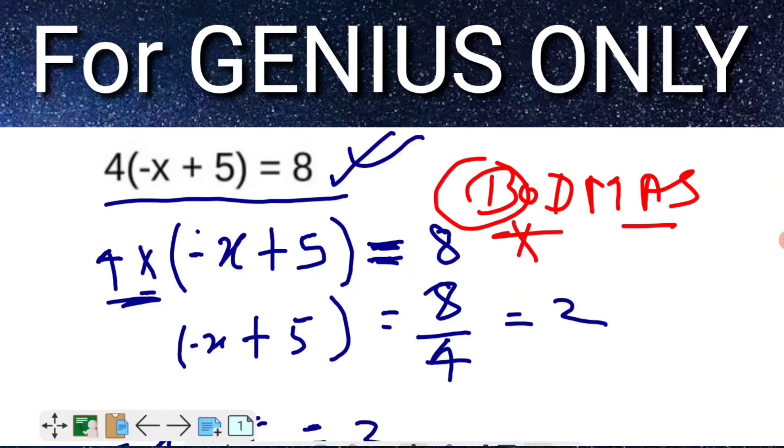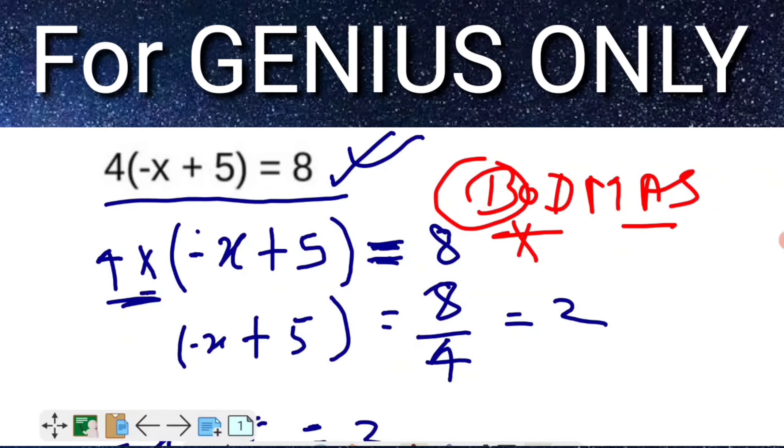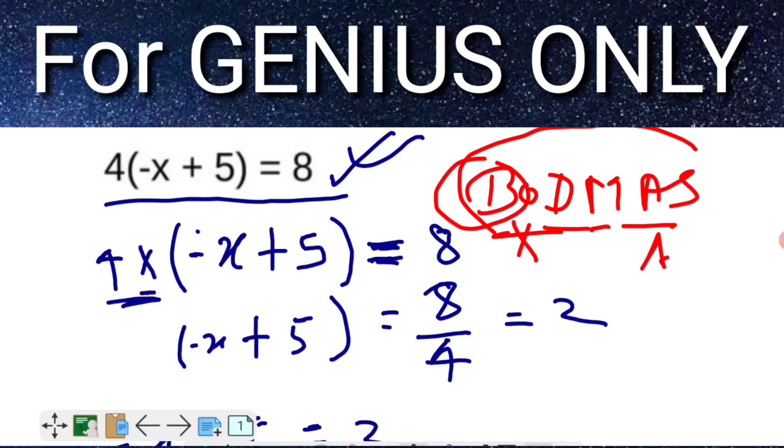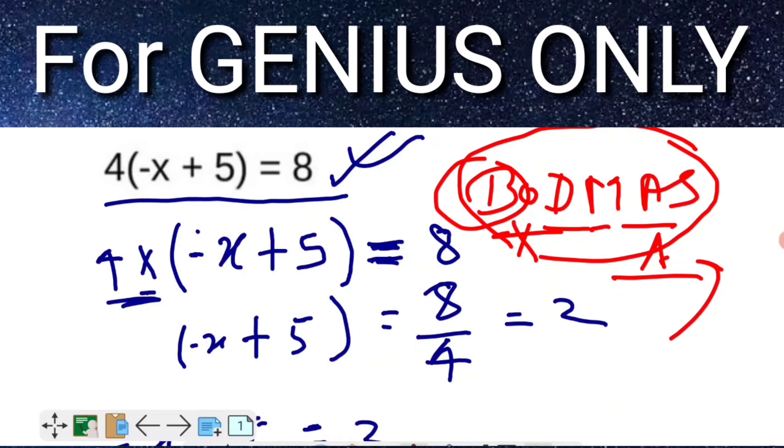First we have to solve brackets, then other operations like square and square root if available, then division, then multiplication, then addition, and last is subtraction. When you follow these steps, you will get the exact answer to any equation.